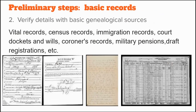Before you look for criminal records, look at basic genealogy records for the family member who ran afoul of the law. Use records such as census, birth, marriage, death, immigration, military, and other records to create a timeline of the ancestor's life that includes the locations of where the ancestor lived during each time period.